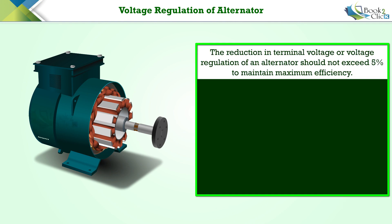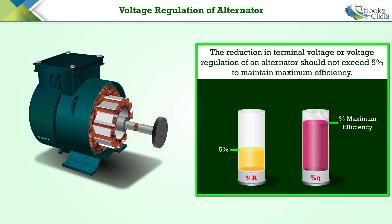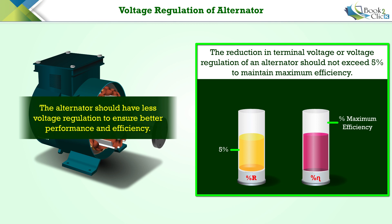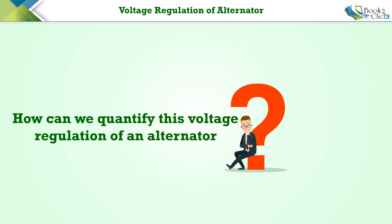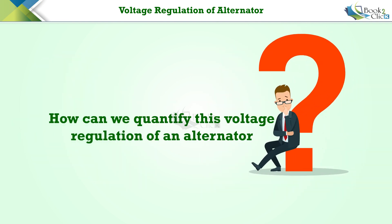However, this full load will cause a further reduction in the terminal voltage. According to IEEE guidelines, this reduction in terminal voltage, or voltage regulation of an alternator, should not exceed five percent to maintain maximum efficiency. If the voltage regulation of the alternator goes beyond five percent, it will reduce the maximum efficiency of the alternator. Therefore, the alternator should have less voltage regulation to ensure better performance and efficiency.